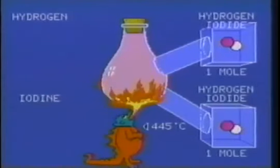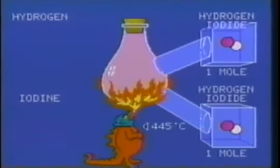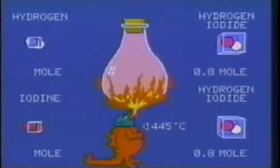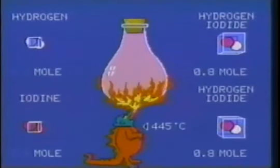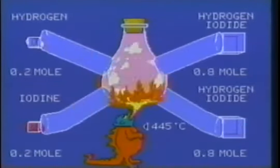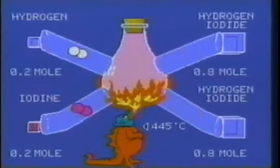On analysis, however, the flask actually contains only 1.6 moles of hydrogen iodide, 0.2 moles of hydrogen, and 0.2 moles of iodine. Has this reaction actually stopped? Or has it reached dynamic equilibrium with ongoing reactions in two directions?